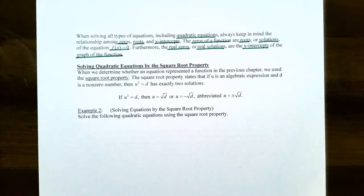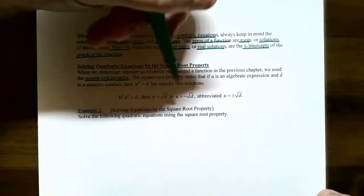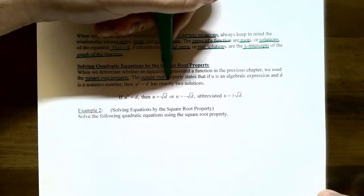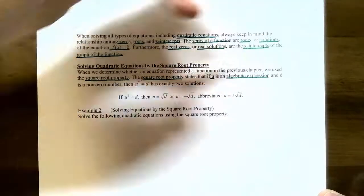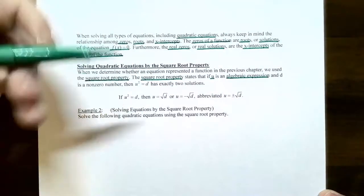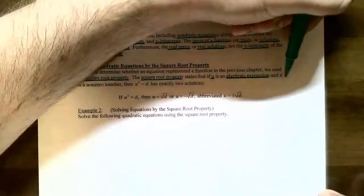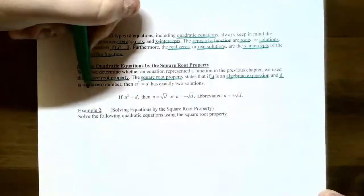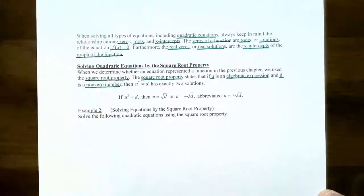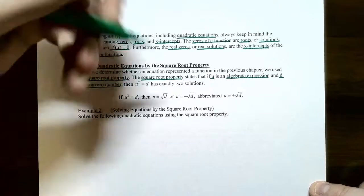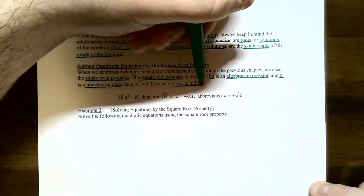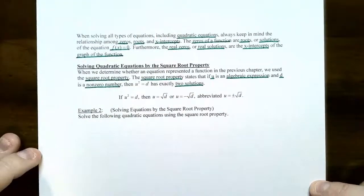We actually have used the square root property once before when we were talking about whether an equation is a function or not. The square root property states that if you have an algebraic expression represented as u, and d is a non-zero number, then u squared equals d will have exactly two solutions, just like what we would expect with a quadratic equation.